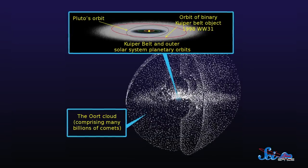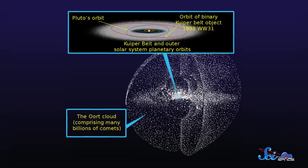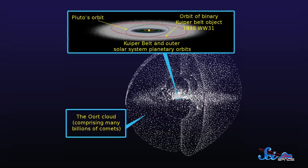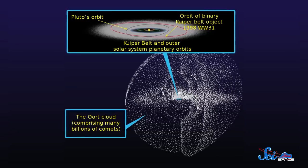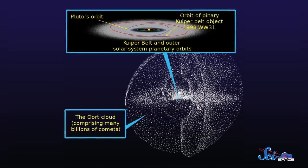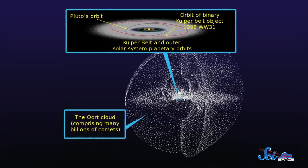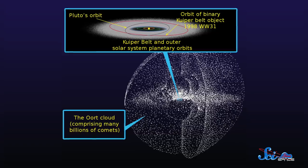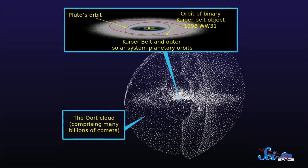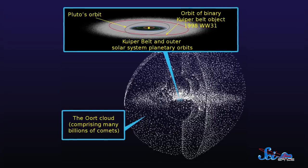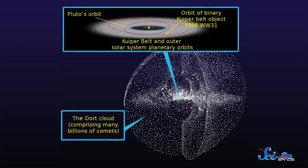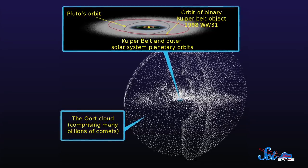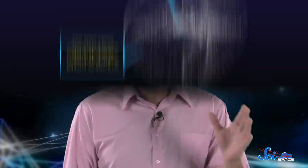Beyond about 55 AU, Neptune's influence becomes weaker and less important. That's where the scattered disk starts, and it extends all the way to the edge of the Oort Cloud, thousands of AU from the Sun. Objects in the scattered disk are, well, scattered.